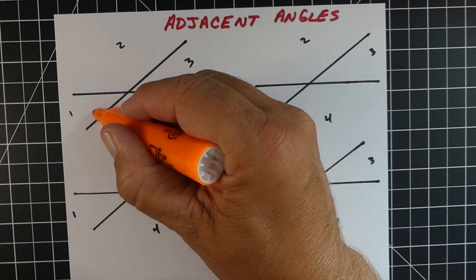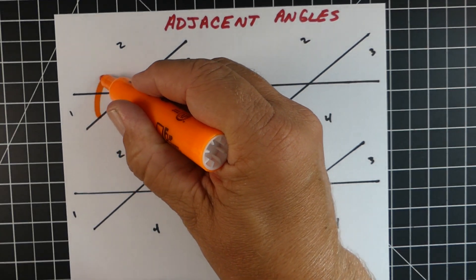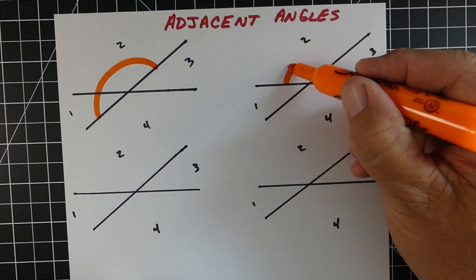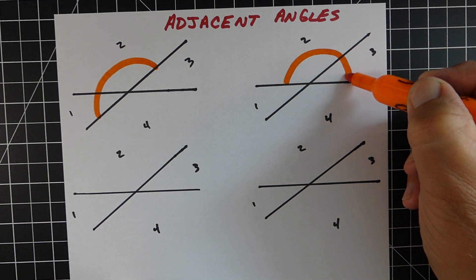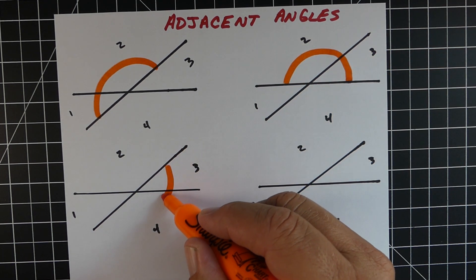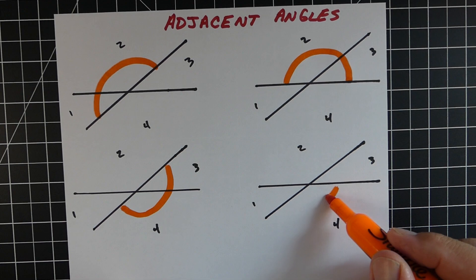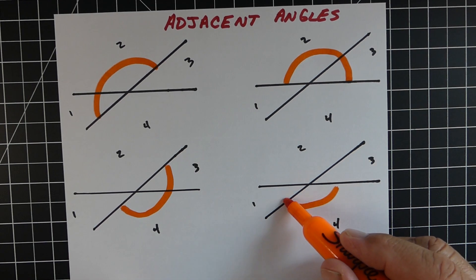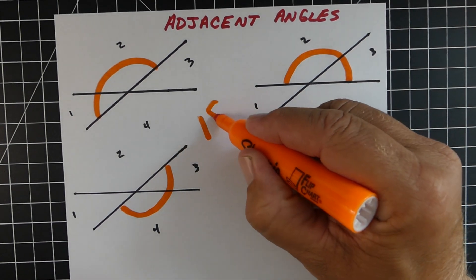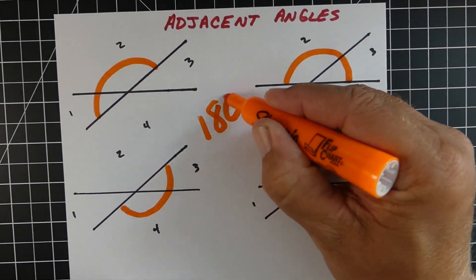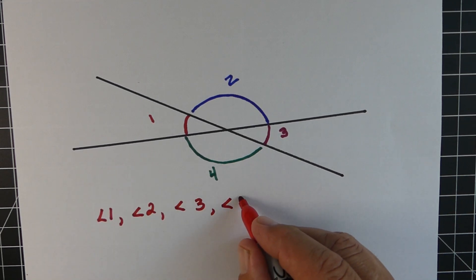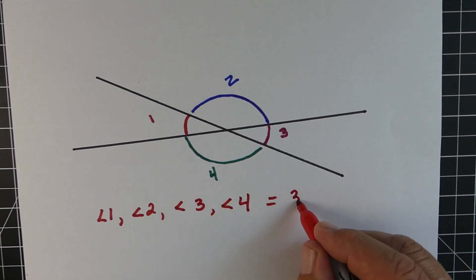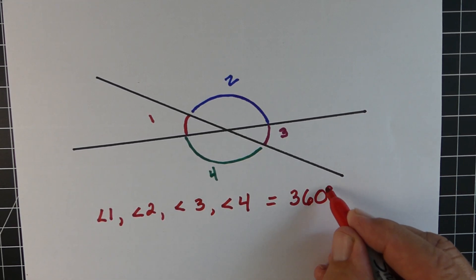Angles that are side by side, like angles one and two, two and three, three and four, or angles four and one, those are called adjacent angles and they're going to equal 180 degrees. And then finally, all four of these angles that come together are going to equal 360 degrees.